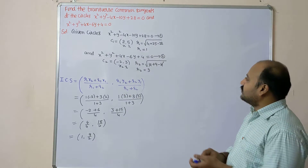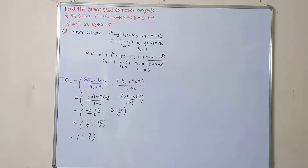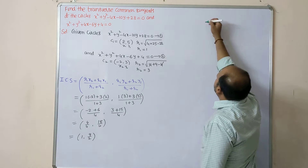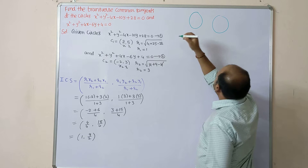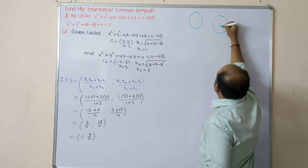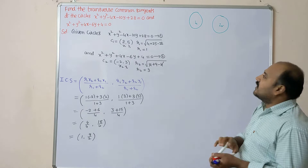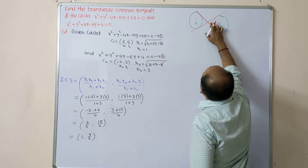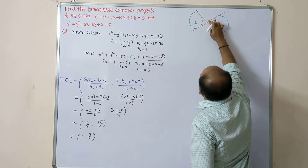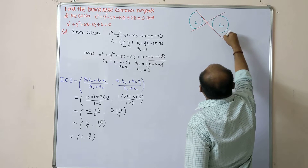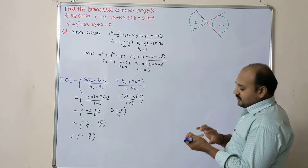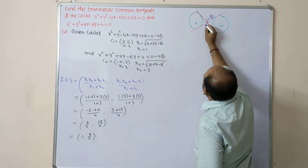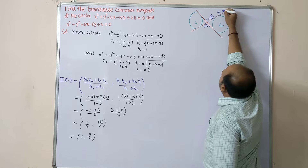This point (1, 9/2) is called the internal center of similitude (ICS). The figure will come like this: two circles with centers C2 and C1, with the two transverse common tangents crossing at the ICS point. So ICS = (1, 9/2), and these are the transverse common tangents Tc.